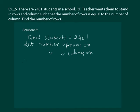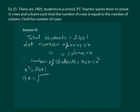Therefore, number of students is equal to x times x, that is equal to x square. So we have x square is equal to 2401. This implies that x will be equal to square root of 2401.